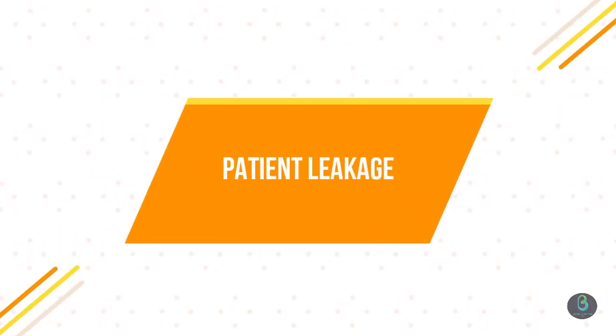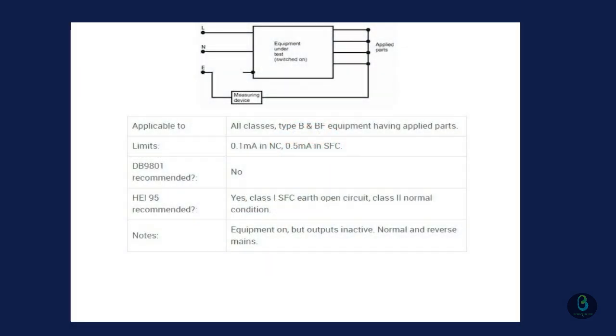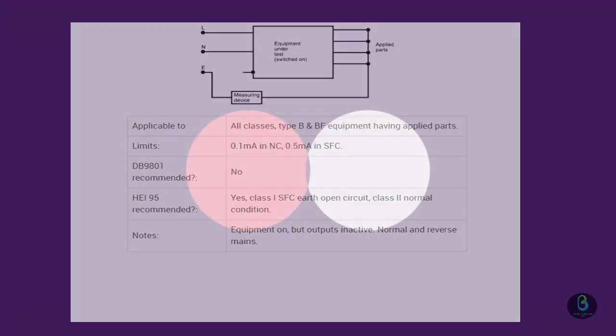Patient Leakage. By applying mains voltage to the applied parts, the leakage current that would flow from an external source into the patient circuits can be measured. Although the safety tester normally places a current limiting resistor in series with a measuring device for the performance of this test, a shock hazard still exists. Therefore, great care should be taken if the test is carried out in order to avoid the hazard presented by applying mains voltage to the applied parts.